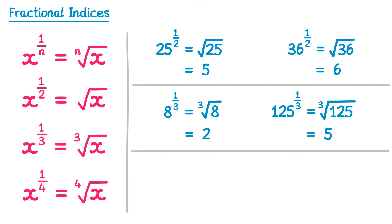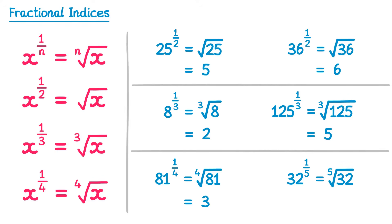Let's have a look at 81 to the power 1 quarter — that's the fourth root of 81. So we're looking for a number we multiply 4 times to get 81, and this is 3, since 3 times 3 times 3 times 3 is 81. And we can even do 32 to the power 1 fifth: this means the fifth root of 32, so we're looking for a number we multiply 5 times to get 32, and that's 2, since 2 times 2 times 2 times 2 times 2 is 32.